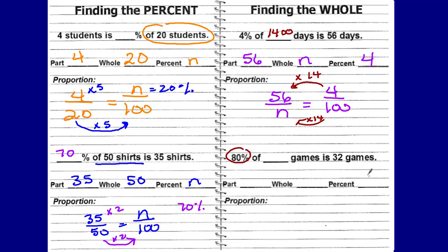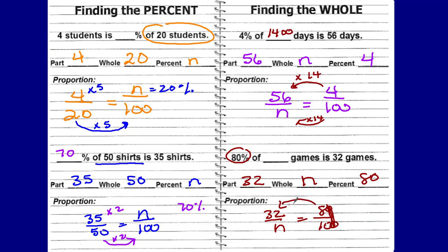80% — here's our percent — of how many total games we don't know, is 32. Set it up: part to whole, 32 to n, is equal to 80 out of 100. Going from the known to the unknown, right to left — can I use a scale factor to go from 80 to 32? No. So let's simplify: both end in zero, so divide by 10, giving 8 to 10 ratio. Now, can I use a scale factor to go from 8 to 32? Yes — 8 times 4 gives 32, so multiply 10 times 4 to get 40. 80% of 40 games is 32.